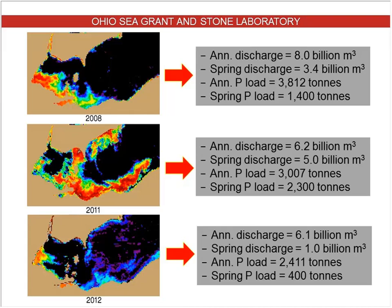In 2008, spring discharge was 3.4 billion cubic meters and the spring load of phosphorus was 1,400 metric tons. In 2011, the worst bloom on record, with 5 billion cubic meters of spring discharge, the spring load was 2,300 metric tons — that's where that bloom is being driven from. In contrast, in 2012, with only 1 billion cubic meters of spring discharge, the spring load was only 400 metric tons — not enough phosphorus in that spring period to drive a bloom.